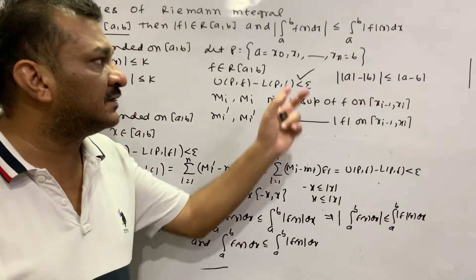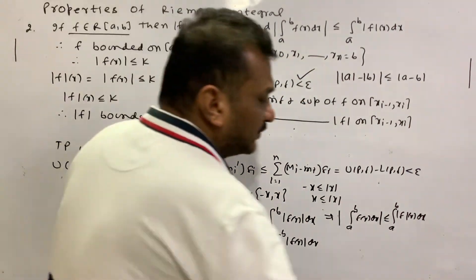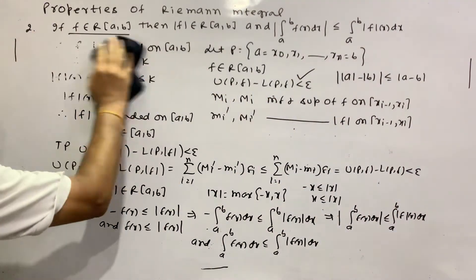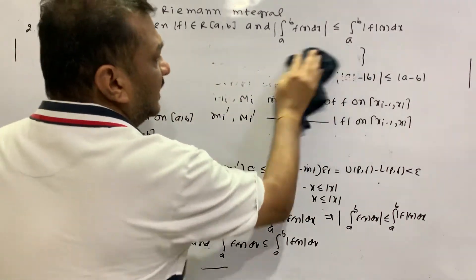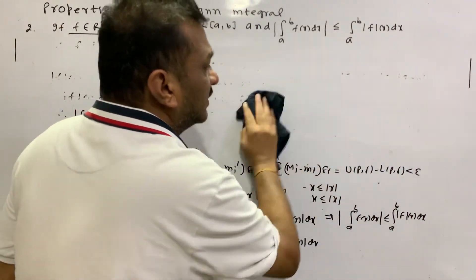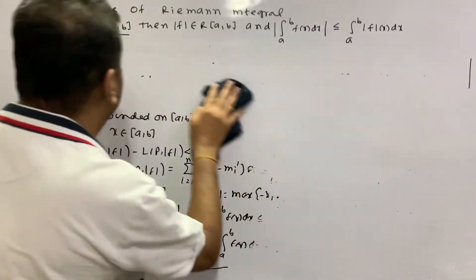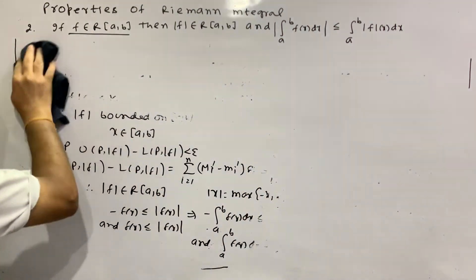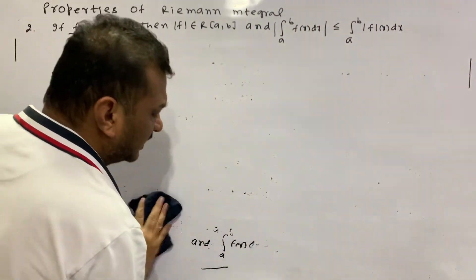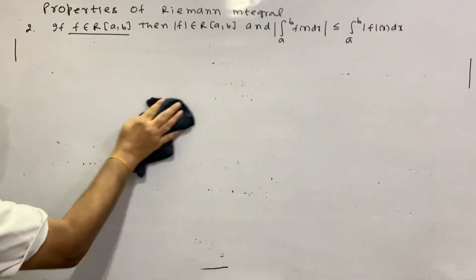Now the converse: the converse may not hold. That is, |F| may be Riemann integrable but F is not necessarily Riemann integrable. If F is Riemann integrable, then |F| is also Riemann integrable — but not conversely. |F| being Riemann integrable does not imply F is Riemann integrable.